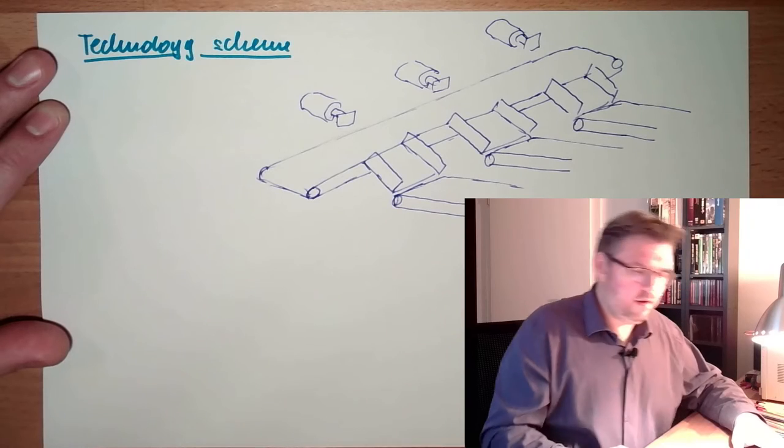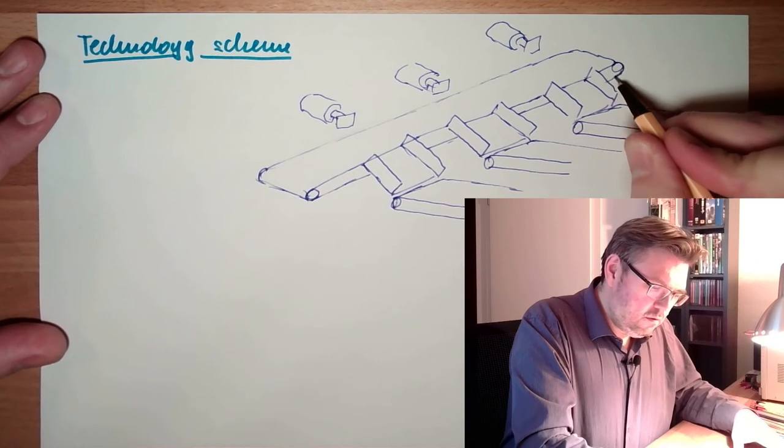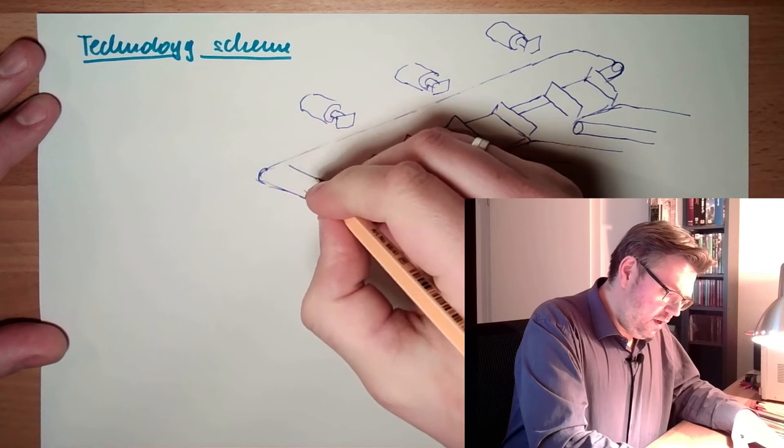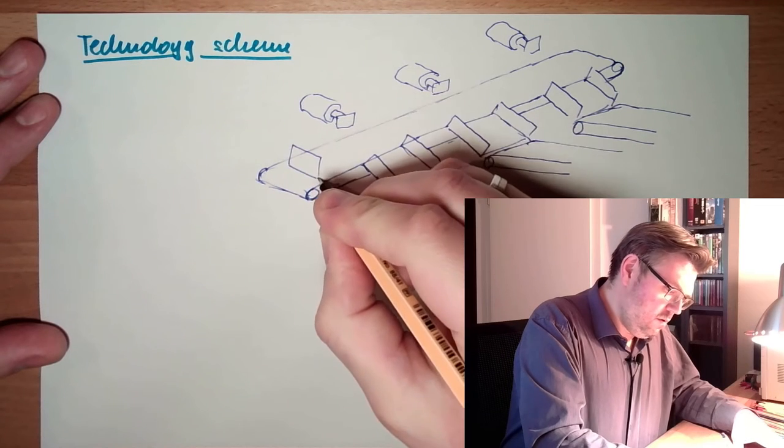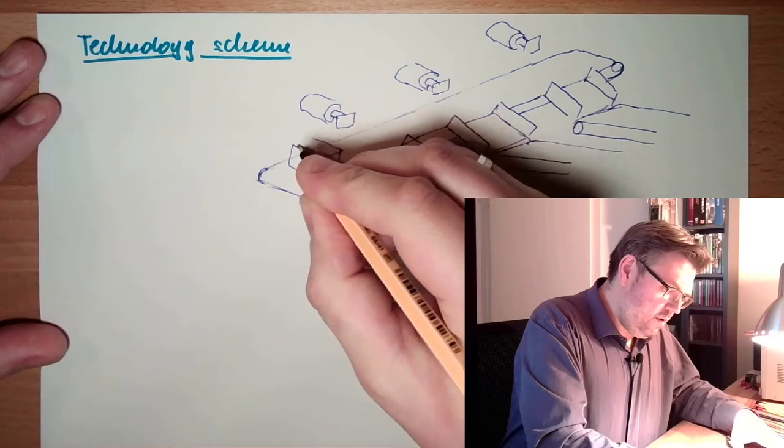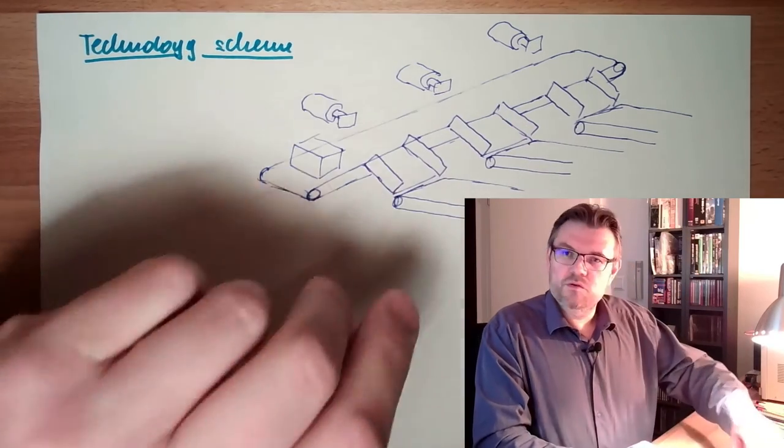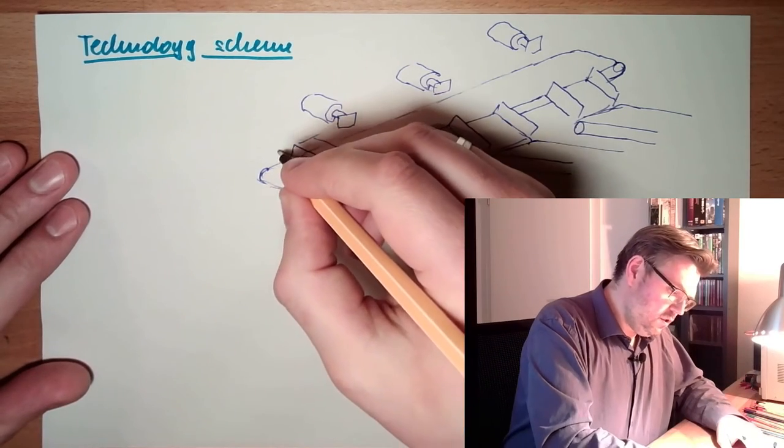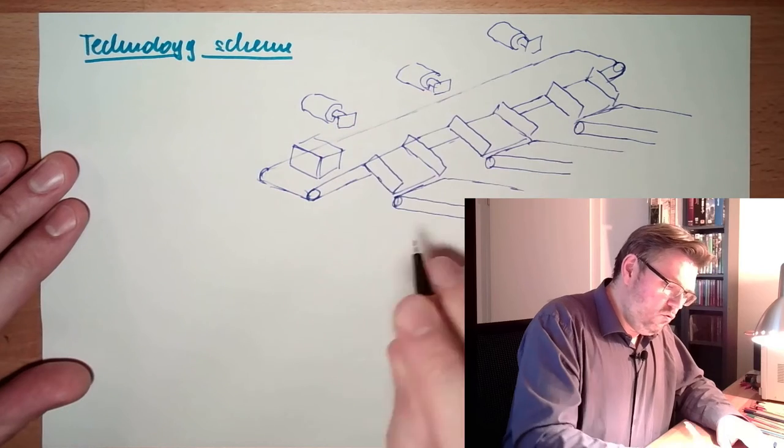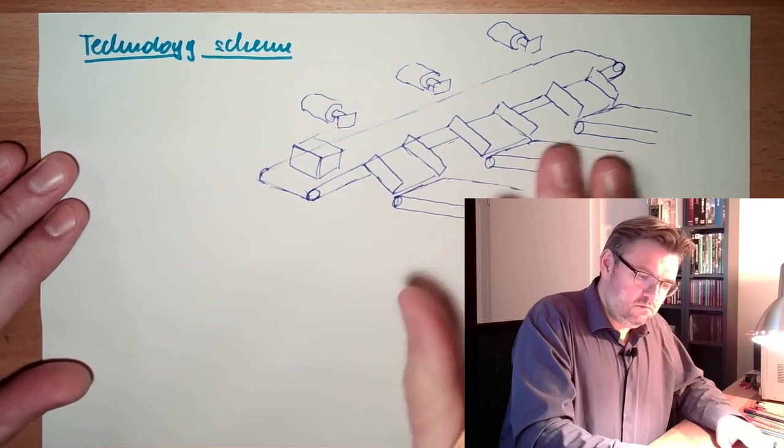So this should be a parcel distributor. There's a parcel from whomever and it shall be distributed to one of these three queues here.